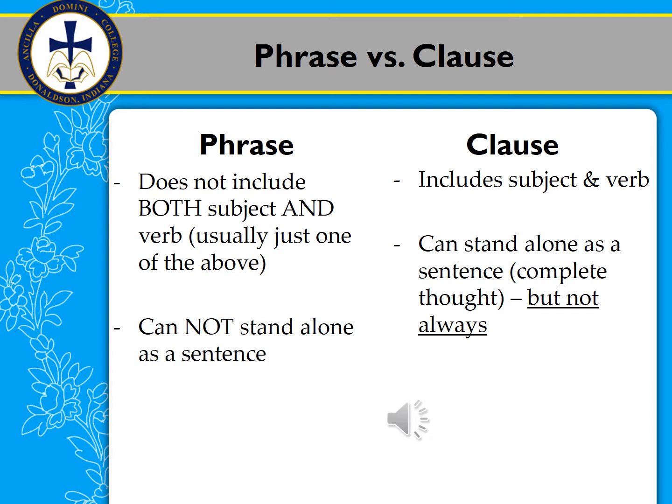Let's start off by talking about phrases and clauses — these can sometimes trip students up. There is a main difference between a phrase and a clause: a phrase does not include both a subject and a verb. It's a series of words that fit together, but they do not include both a subject and a verb. A clause, on the other hand, does include a subject and a verb.